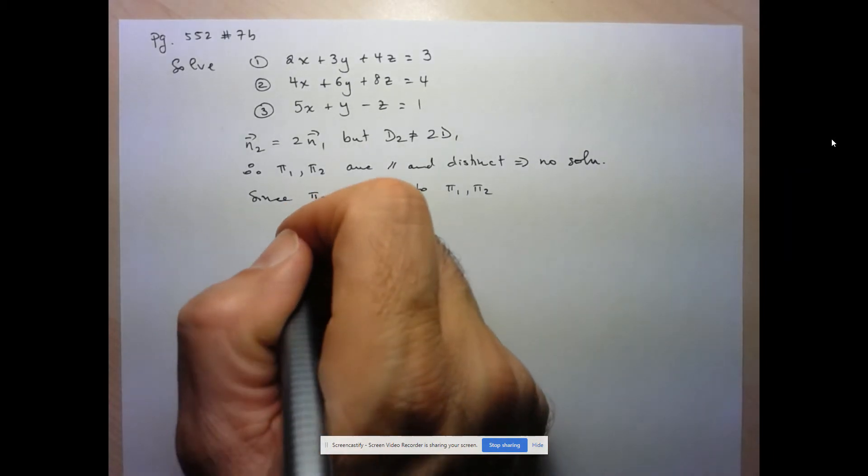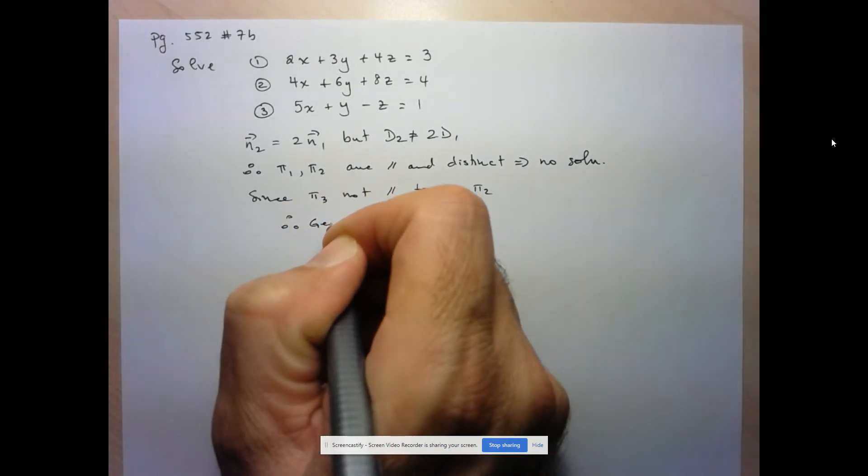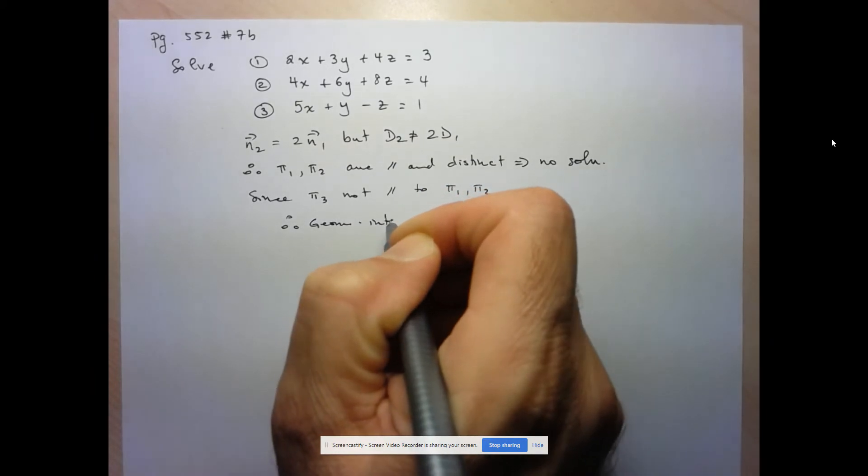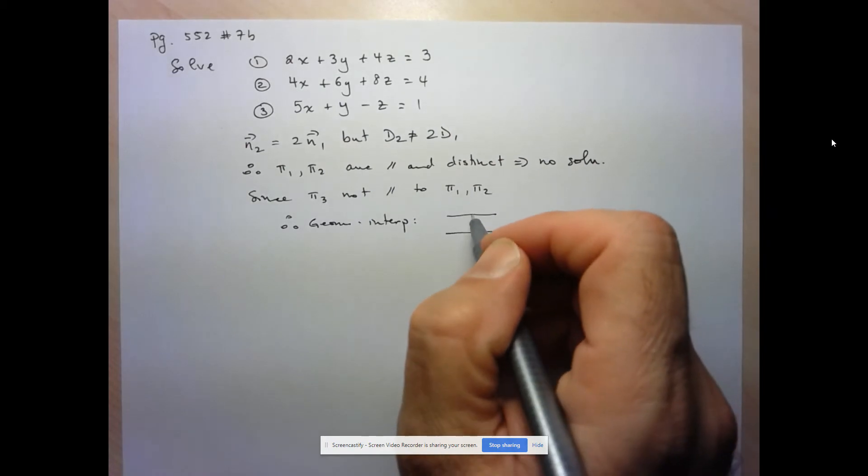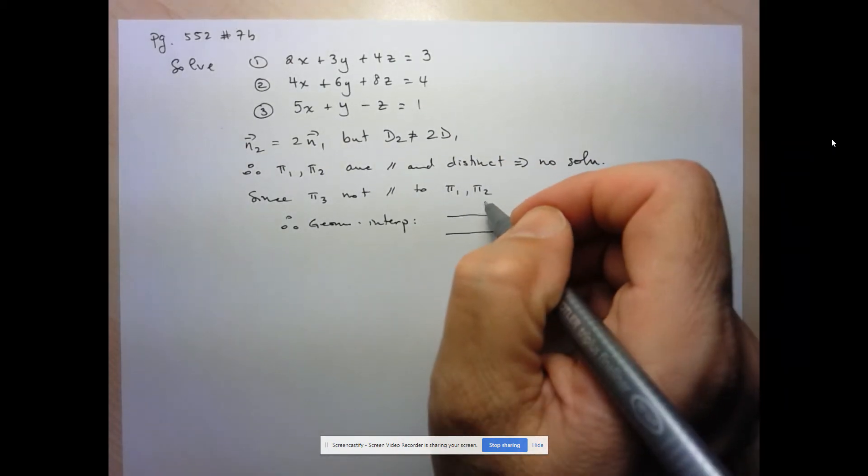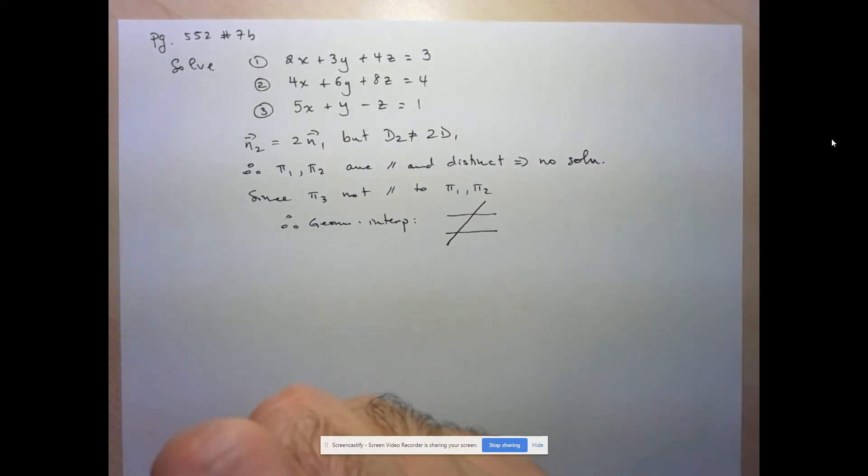we can say that the geometric interpretation is going to be the sort of not equal sign. So two planes that are parallel and distinct, and then another plane which crosses through them, not parallel.